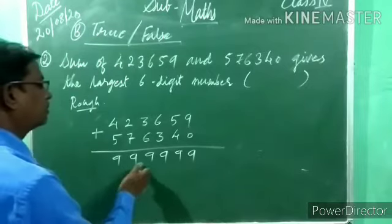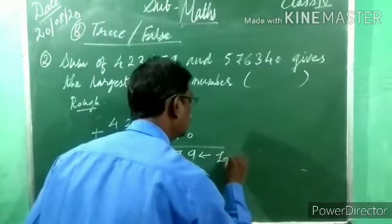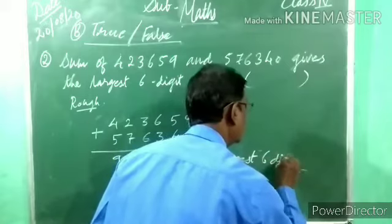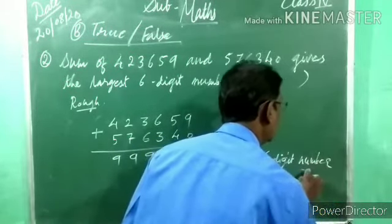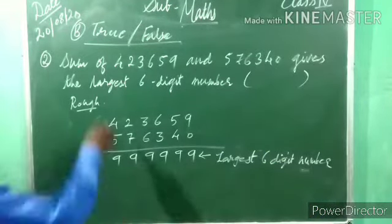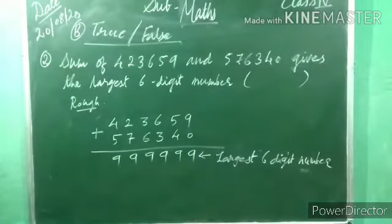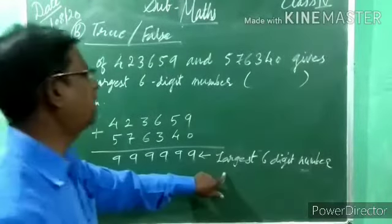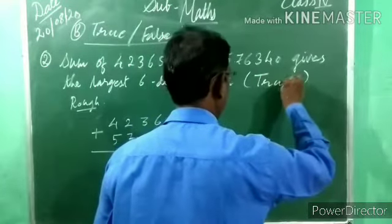That is the largest six-digit number. So the sum of four lakh twenty-three thousand six hundred fifty-nine and five lakh seventy-six thousand three hundred forty gives the largest six-digit number. So this statement is TRUE.